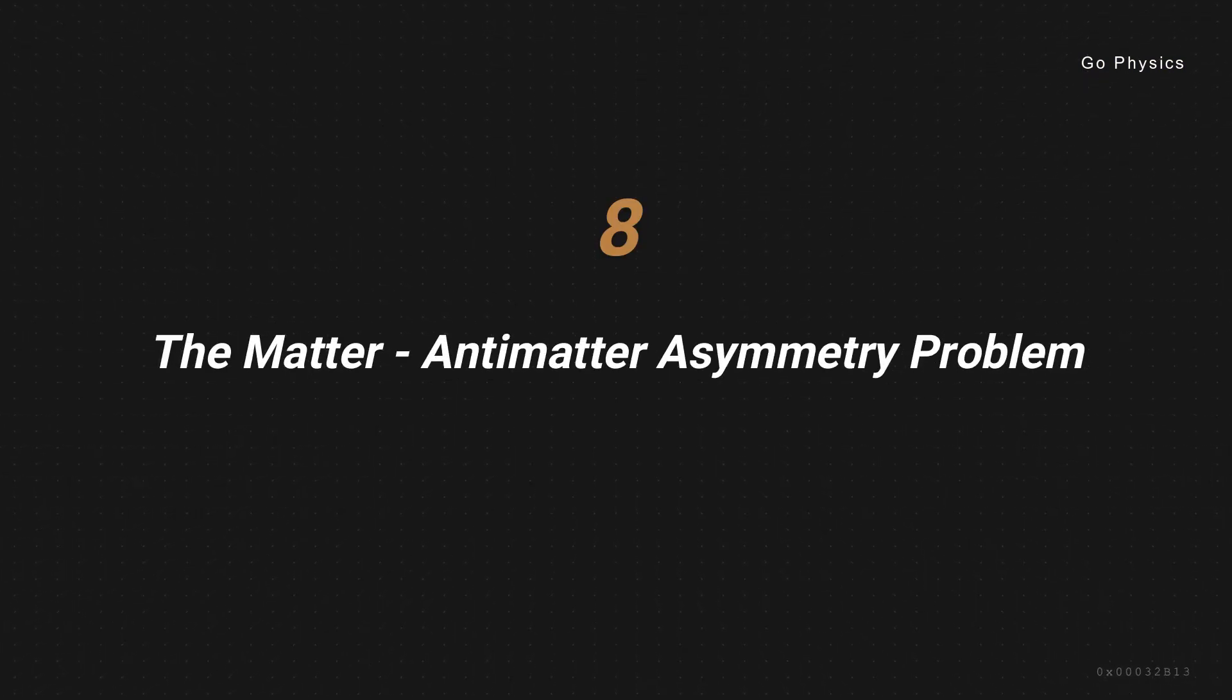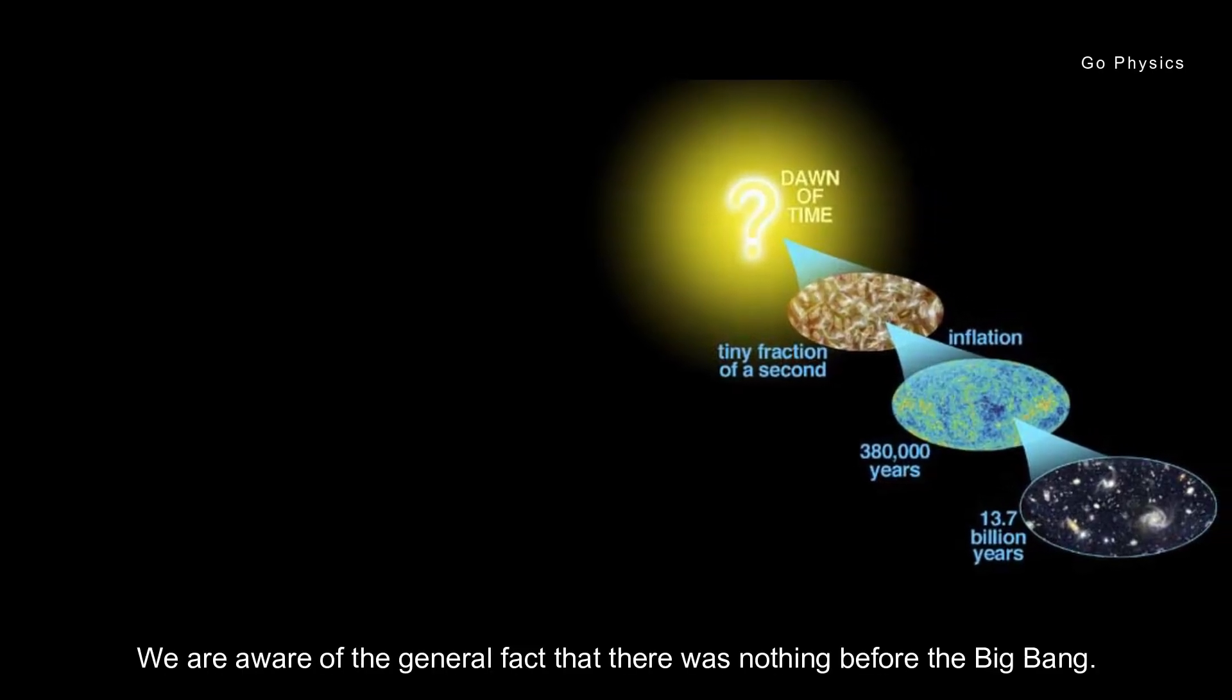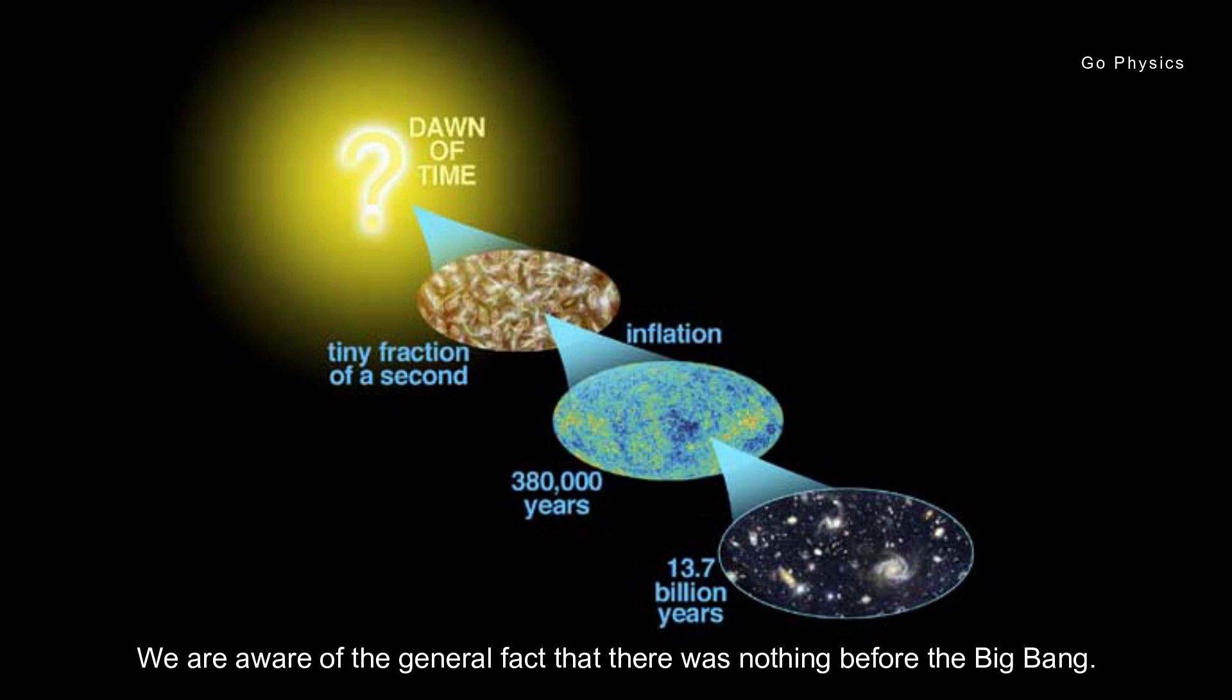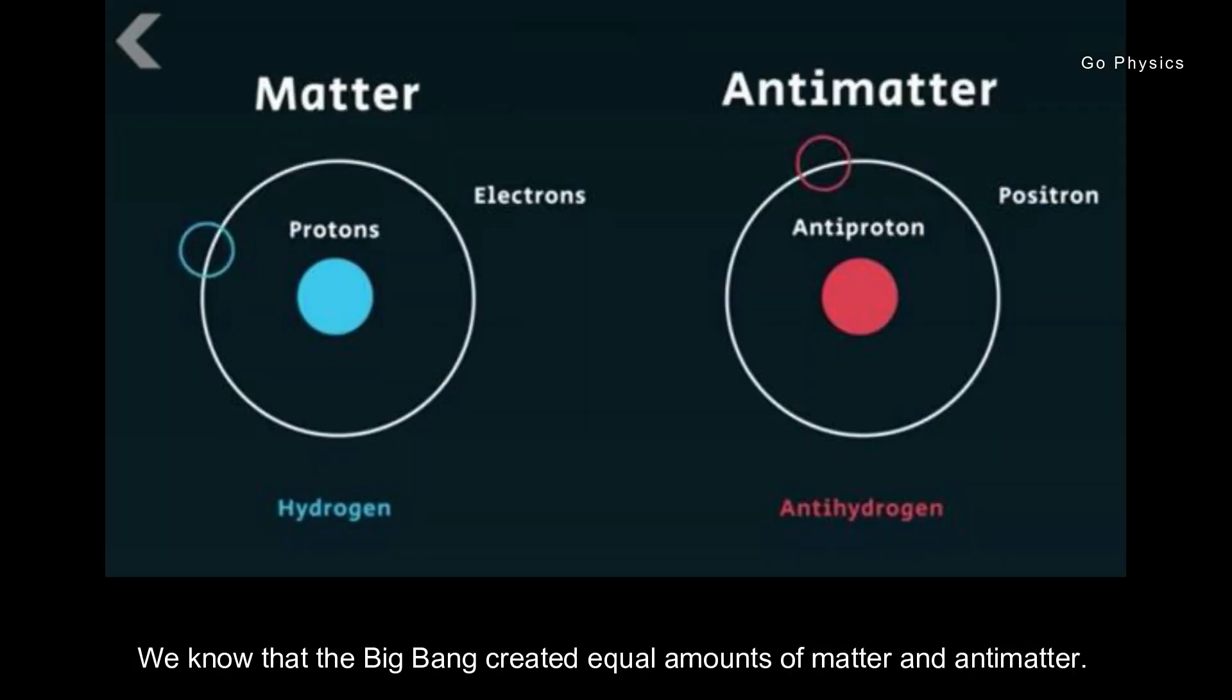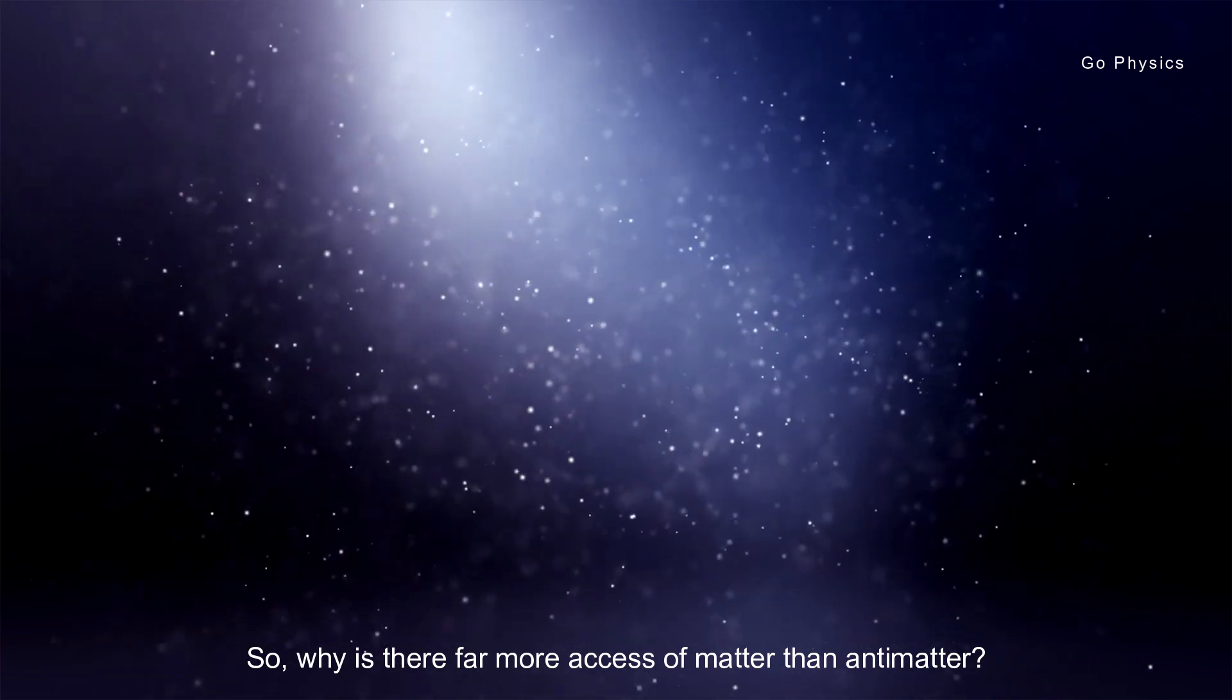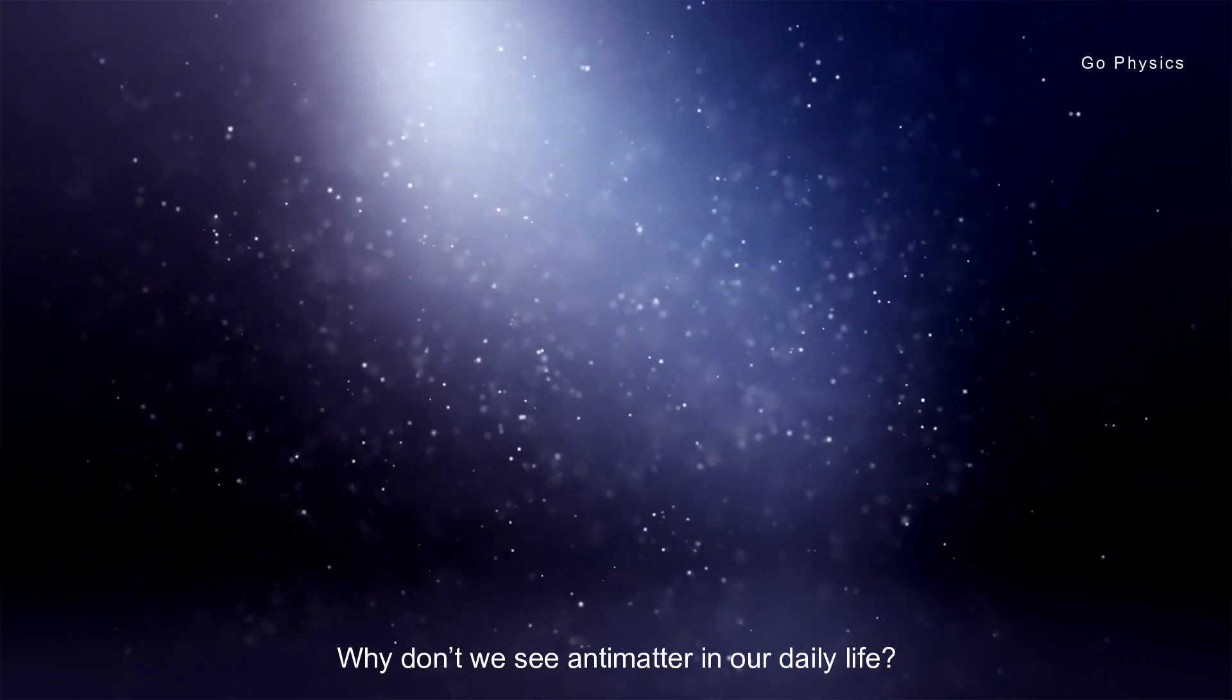As we know it, the matter-antimatter asymmetry problem. We are aware of the general fact that there was nothing before the Big Bang. According to our present knowledge of the Big Bang, we know that the Big Bang created equal amounts of matter and antimatter.